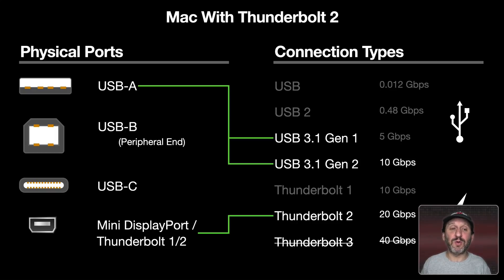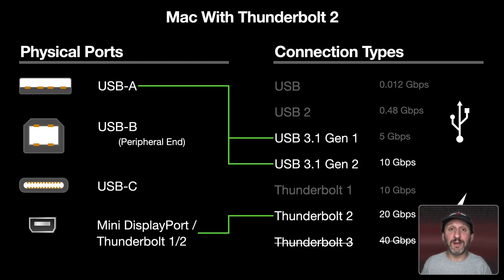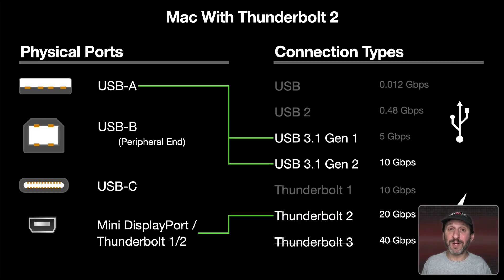If you have an older Mac, say about five years old, you may have USB-A ports and Thunderbolt 2 ports. The USB-A port can connect any USB 3.1 device and is backwards compatible with USB 2 and USB 1. The Thunderbolt port can connect any Thunderbolt 2 device and is backwards compatible with Thunderbolt 1. If you have a much older Mac you may only have a Mini DisplayPort — not Thunderbolt — so you can't hook up Thunderbolt devices, but you can connect a screen using DisplayPort, whether the screen uses Mini DisplayPort or regular DisplayPort.